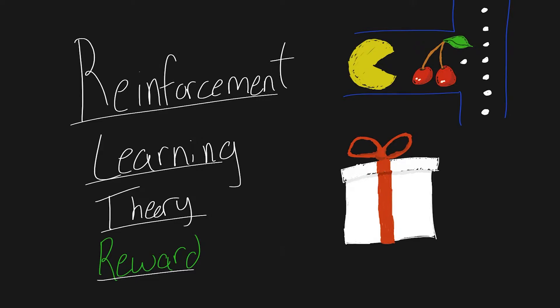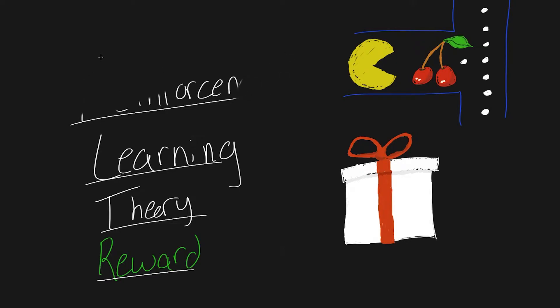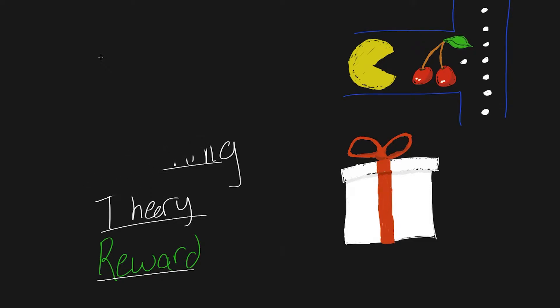So rewards — they're really important, especially in reinforcement learning, where all our learning is based around rewards. As we jump into this, as we talk about rewards, the first thing we need to talk about are returns, which are the rewards from trajectories. And first, we should define trajectory.